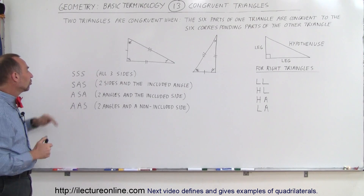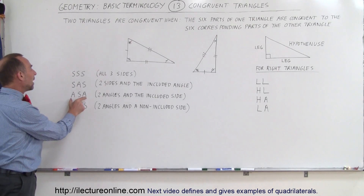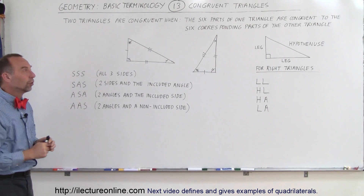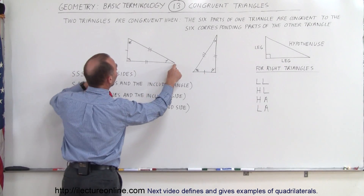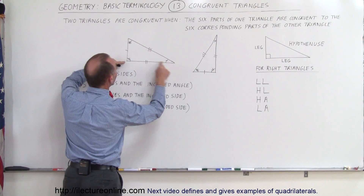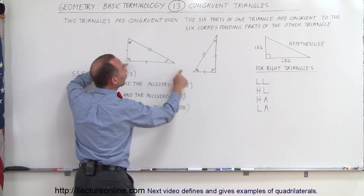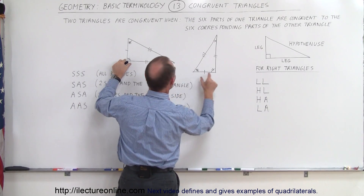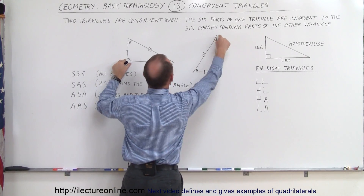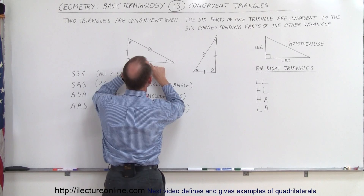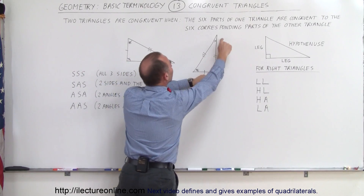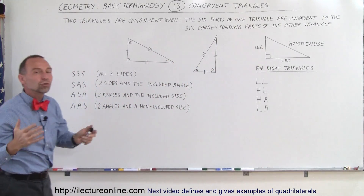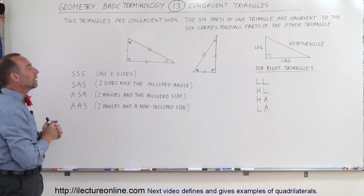It is also sufficient to show that two angles and the included side are equal to one another. For example, if this angle and this angle and the side in between are equal to the corresponding two angles and their included side in the other triangle, then the two triangles must be congruent. This is the ASA case.